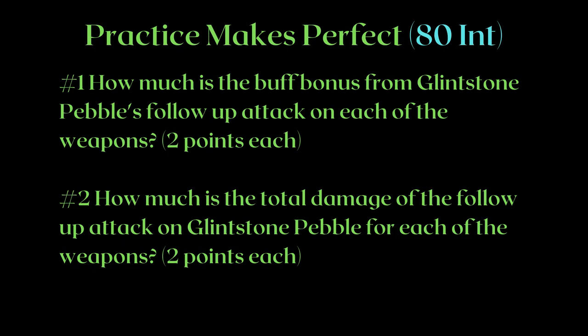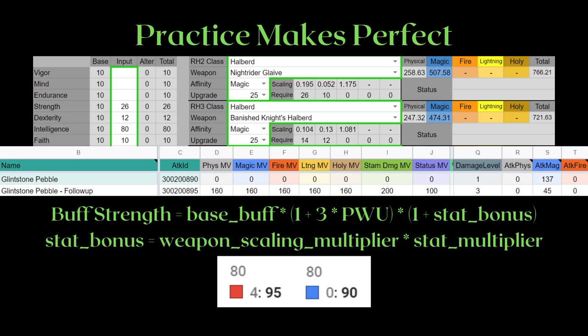Okay, practice makes perfect. I will be providing you with all the necessary information, but it is time to try it on your own to check if you actually understood what I'm talking about. Let's use the same weapons and the same move to keep things as simple as possible, except we're going to be doing the values for 80 intelligence instead of 50 intelligence. Figure out the buff bonus for the Glintstone Pebble for each weapon and then the total damage. 2 points per question per weapon, so 8 points if you get everything right here. Remember your score and continue on to the next section.